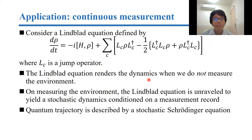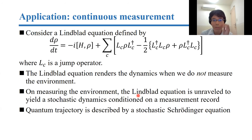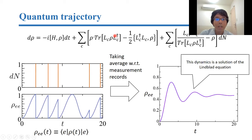I show the application of this bound to the continuous measurement. Let us consider this kind of Lindblad equation, which is given by this equation: ρ is the density operator, H is the Hamiltonian, and L_c is a jump operator. It is known that the Lindblad equation renders the dynamics when we do not measure the environment. When we do measure the environment, the Lindblad equation is unraveled to yield a stochastic dynamics conditioned on the measurement records, called the quantum trajectory, described by a stochastic Schrödinger equation.